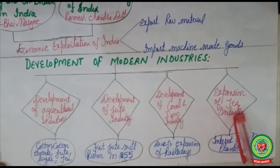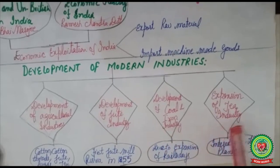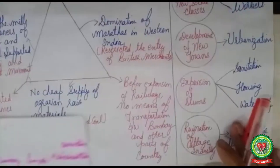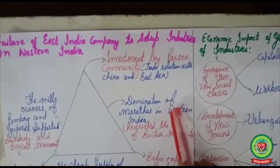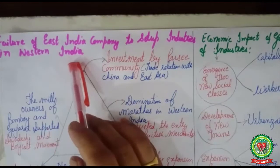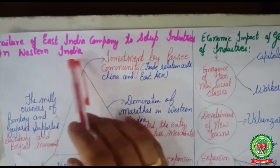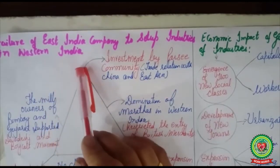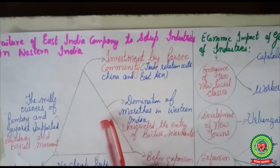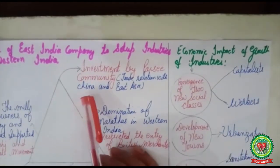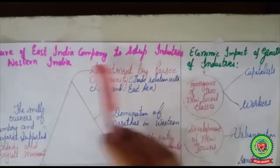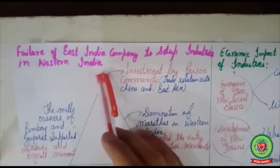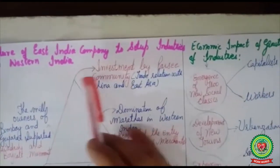But all these industries were developed in the eastern part of India, especially Calcutta. The East India Company was not able to set up its factories and industries in the western part, like Gujarat, Maharashtra, and Bombay. There were many reasons for that. We will go through what were the reasons why the East India Company failed to set up industries in western India.